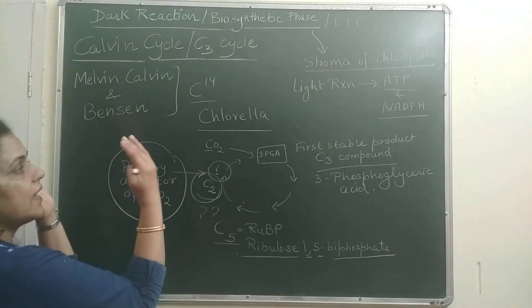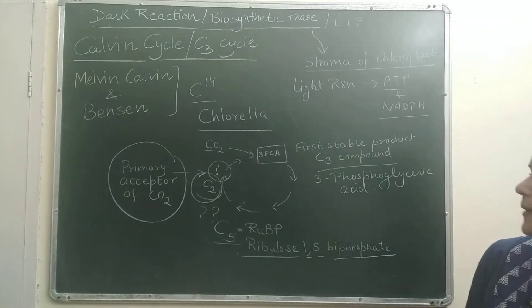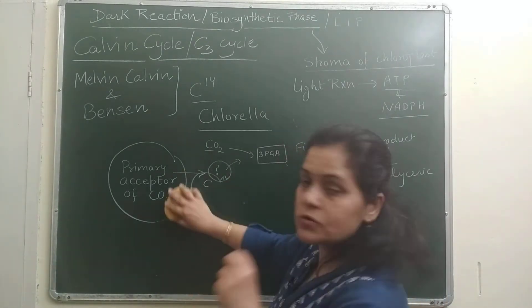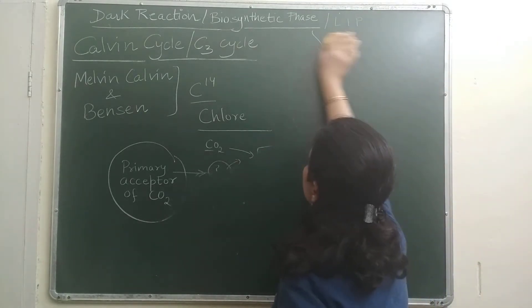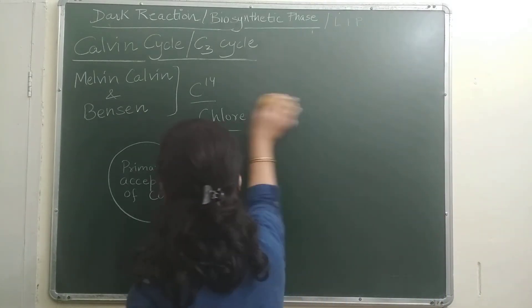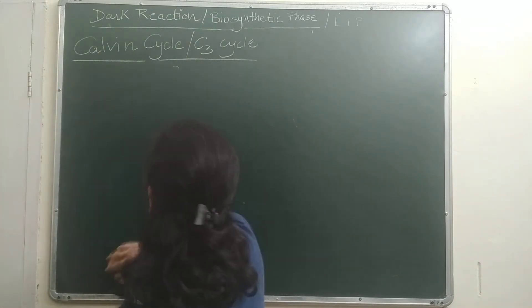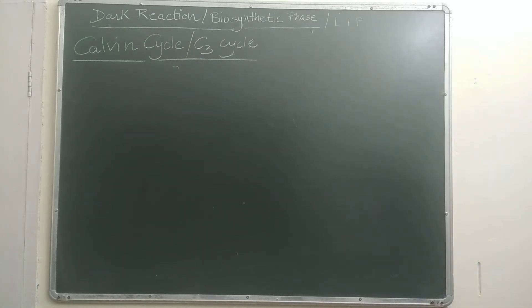Now we will study the steps of this cycle. So there are three steps of this cycle. First I will tell you simply, and then I will elaborate what are the steps. So here the first step in this cycle is carboxylation, carboxylation of RuBP.